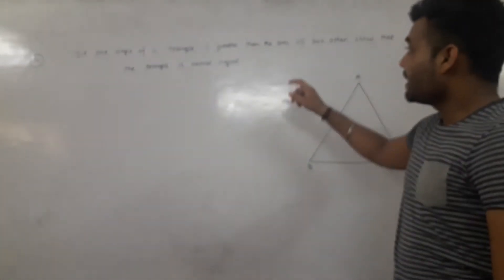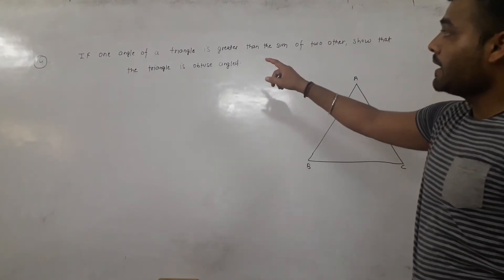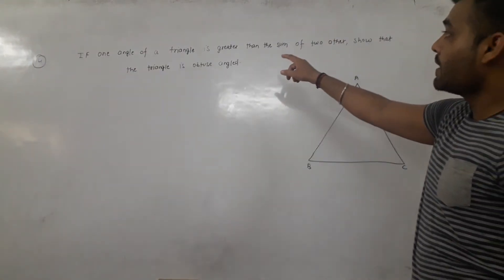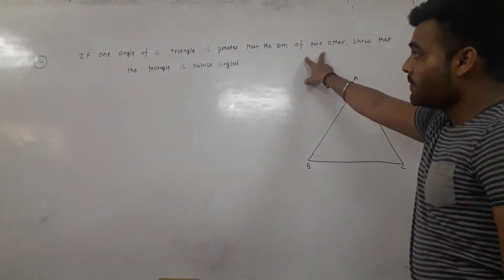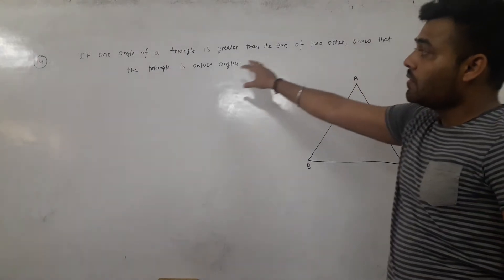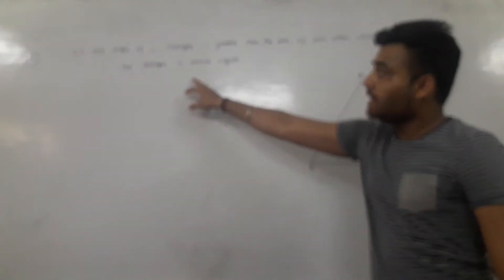We say that if a triangle has one angle greater than the rest of the two angles, prove that it is an obtuse angle.